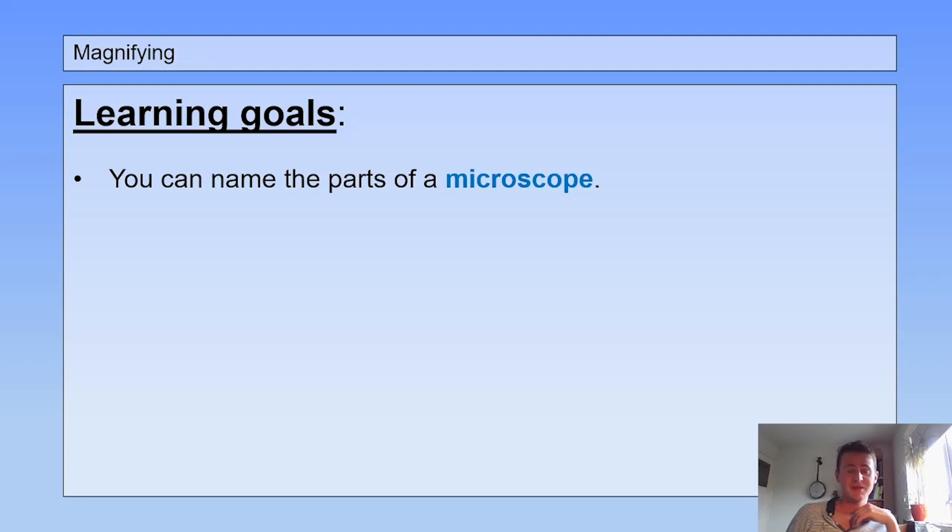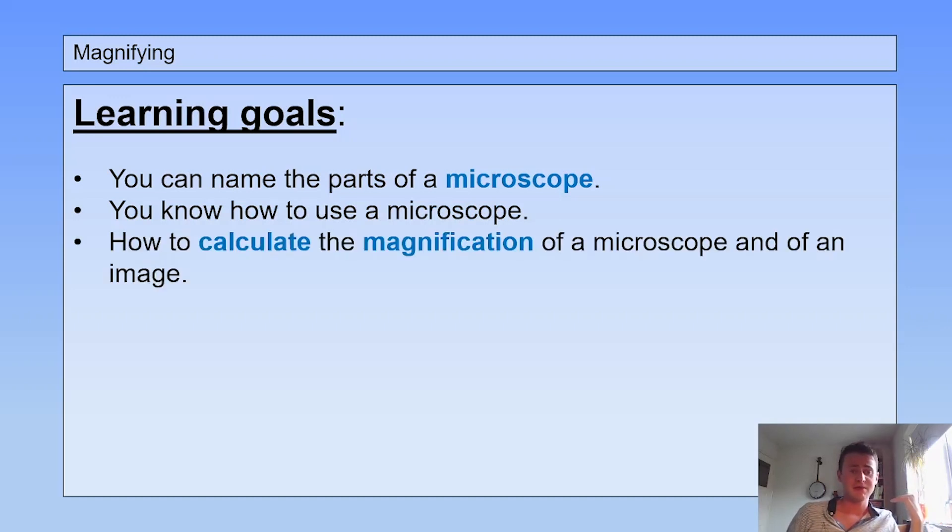The learning goals: you can name the parts of a microscope, you know how to use a microscope, and you know how to calculate the magnification of a microscope and of an image.